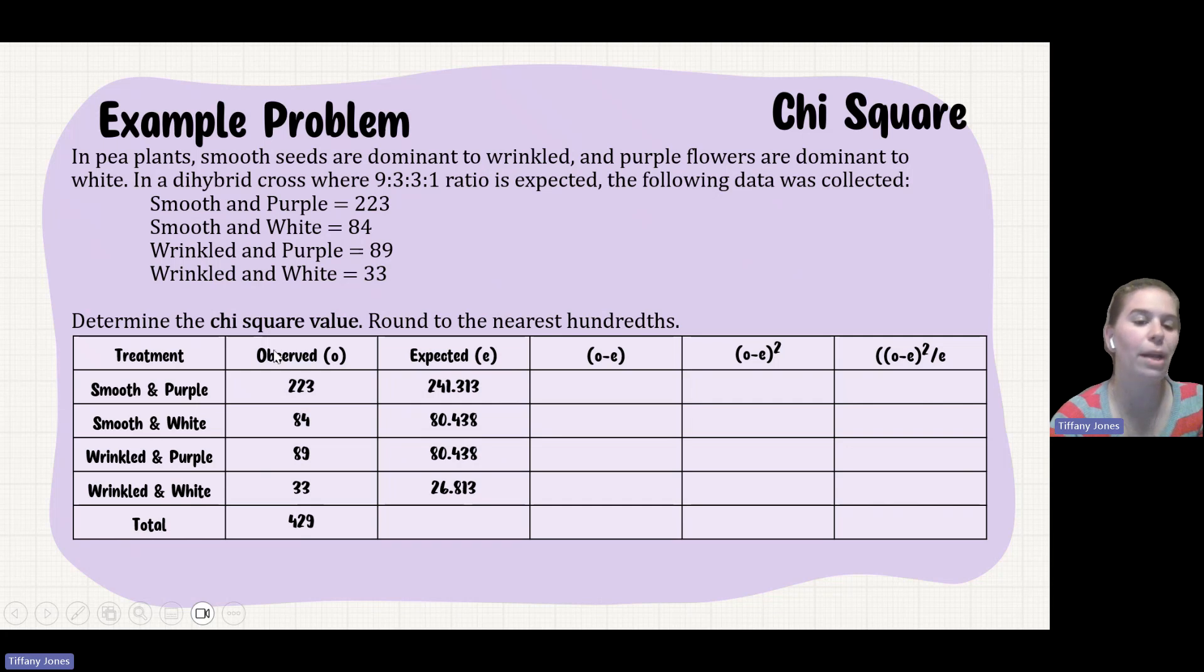So then in order to find my smooth white, I'm going to say 429 times 3 over 16 would give me 80.438. And then I'll do the same thing here. Wrinkled and purple is going to be 3 sixteenths. So 429 times 3 sixteenths gives me 80.438.